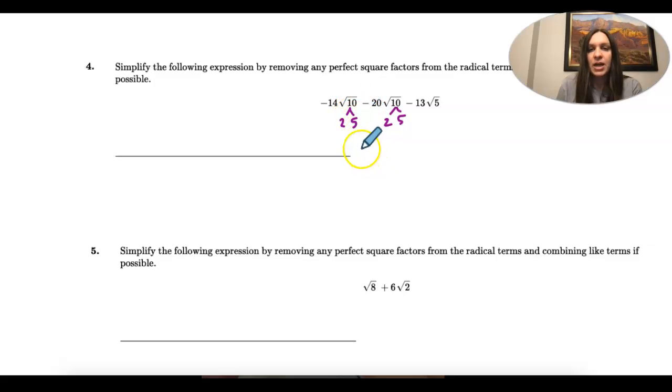So I'm going to have negative 14 minus 20, and I can combine these because the radicand is the same. And also the index is the same. So 14 minus 20, and then the square root of 10 just stays as a like term.